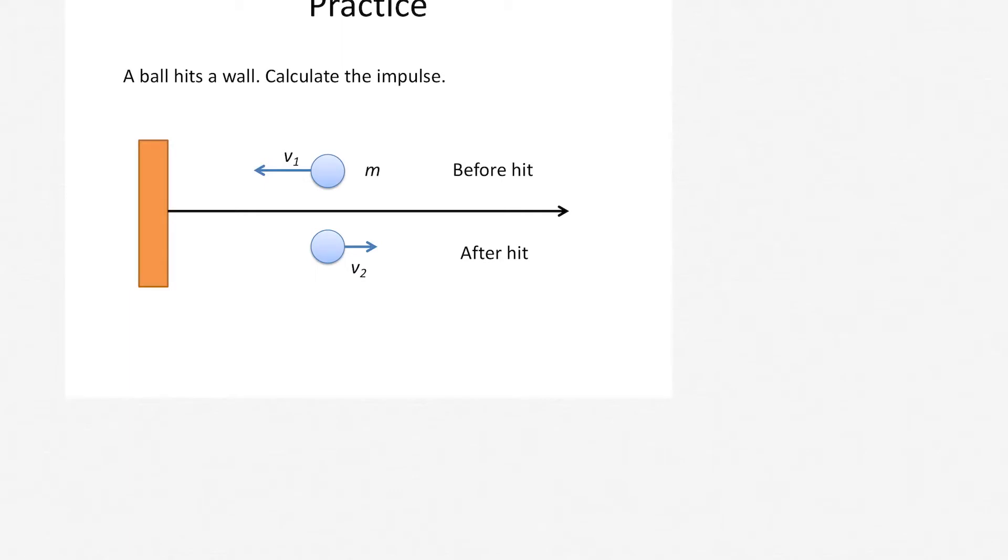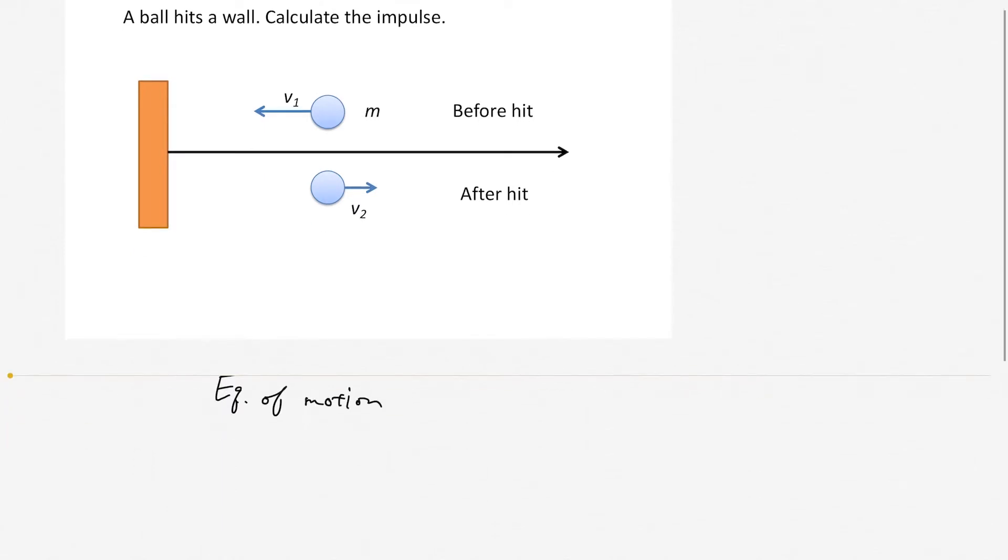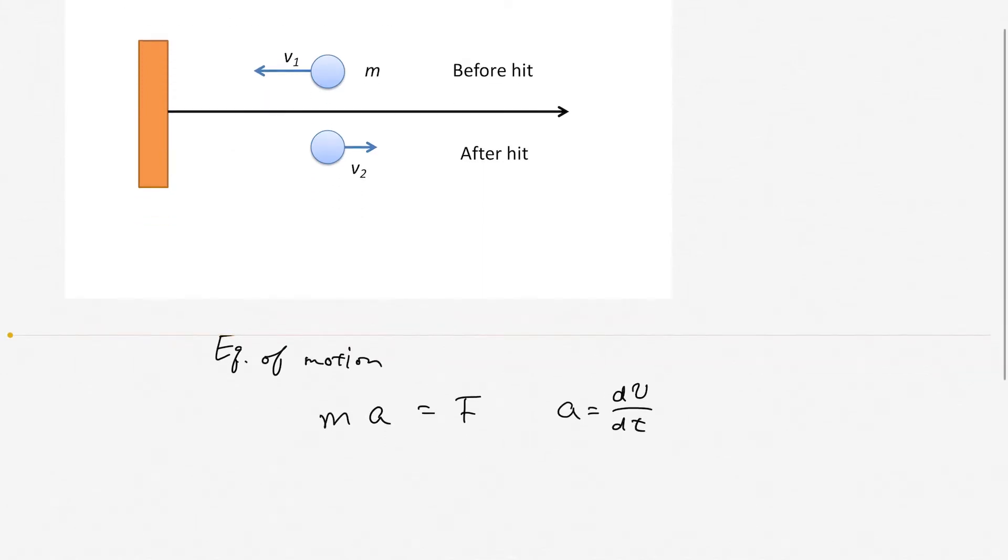We'd like to start with the equation of motion. The equation of motion we studied: ma equals F. And actually the a is the derivative of the velocity with respect to time. So if you substitute this equation, m dv/dt equals F.